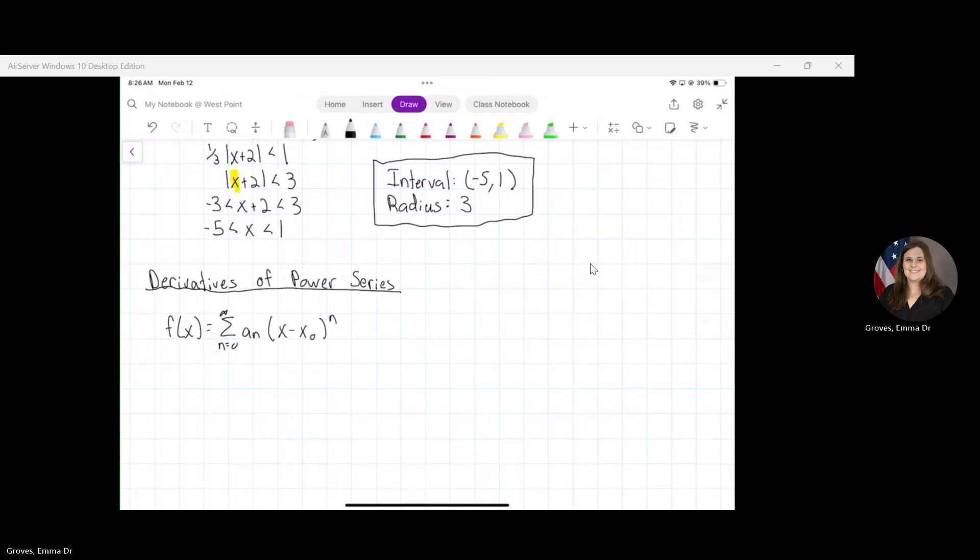If we write out just a couple of terms really quickly, plugging in the zero term is going to give me a_0 because (x - x_0) to the zero is just one. So that's my constant term. Then I'm going to have a_1(x - x_0) plus a_2(x - x_0) squared, etc.